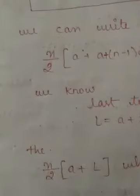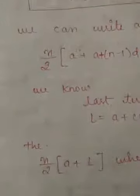So it becomes n upon 2 bracket A plus L. This is the formula for the last term when our last term is given. Okay, hope you better understood the derivation of formula. If you have any problem you can ask me. Thank you.